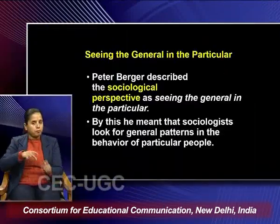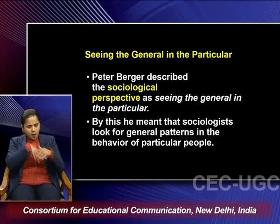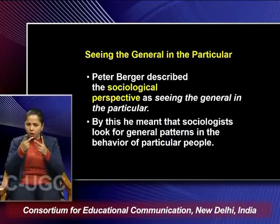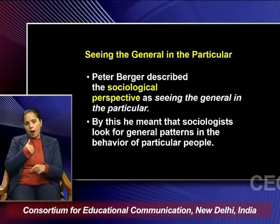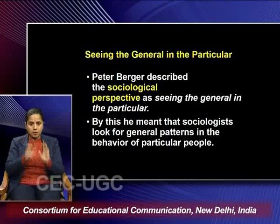The second way to interpret Berger's sociology is his description of sociological perspective as seeing the general in the particular. The general is a common phenomenon affecting everyone; the particular is what happens at an individual level. Many times we consider our individual problems as our own and fail to relate them to wider society. Berger says a sociologist looks for a general pattern in the behavior of particular people — relating the micro with the macro.